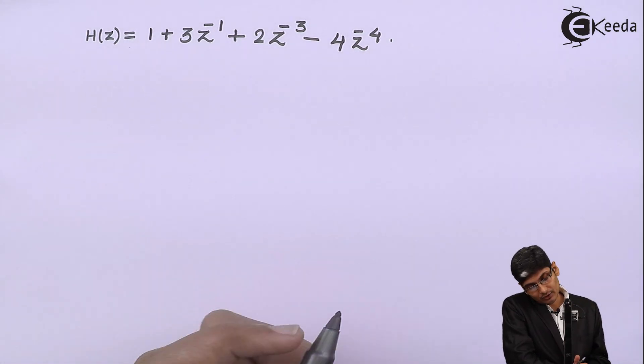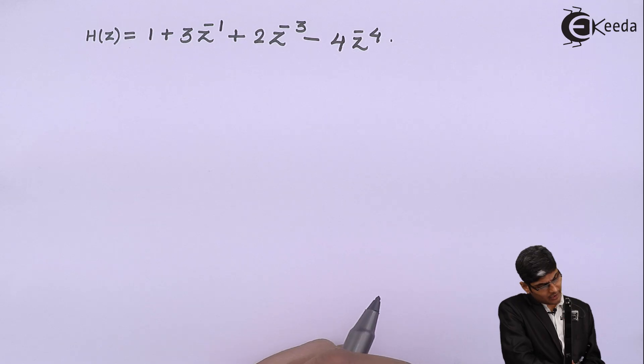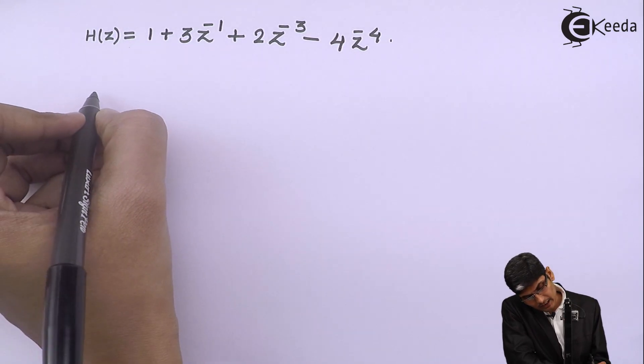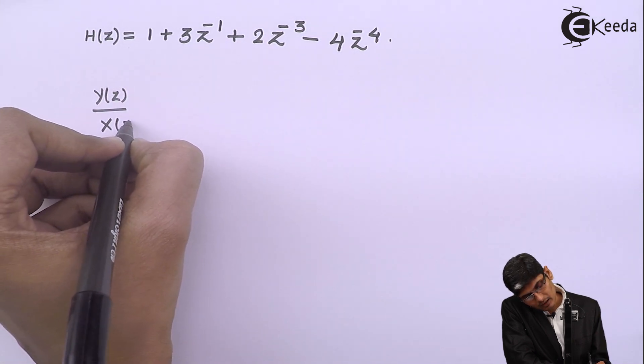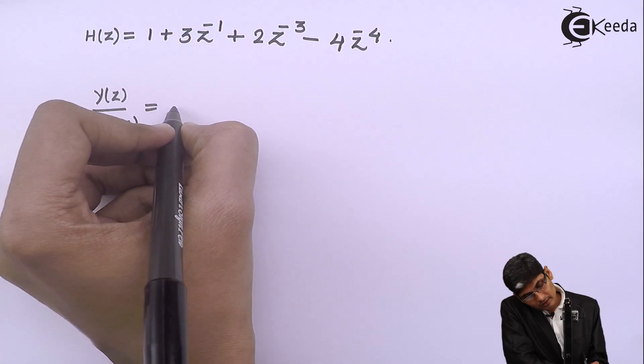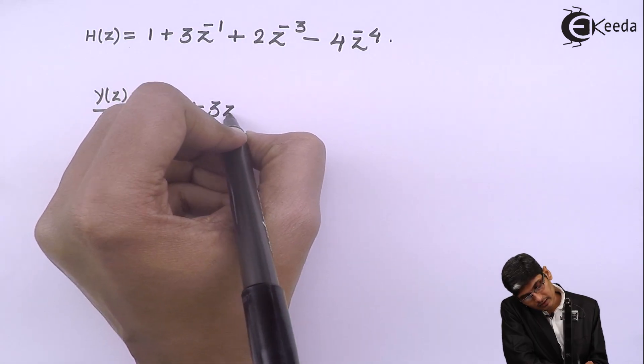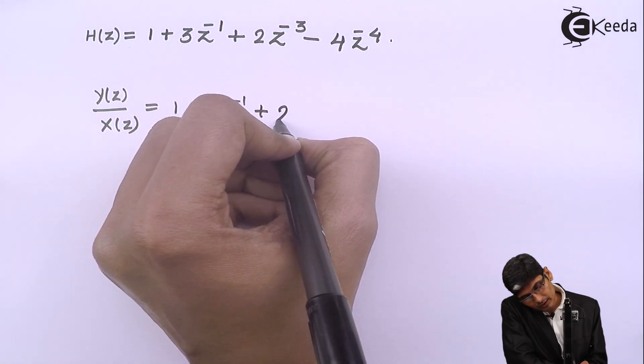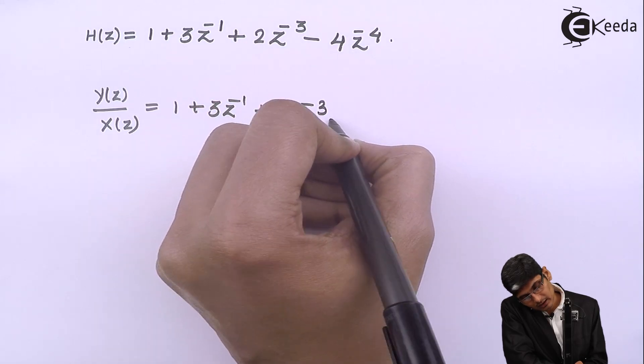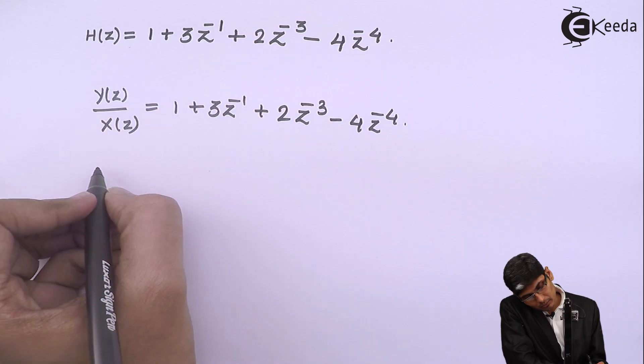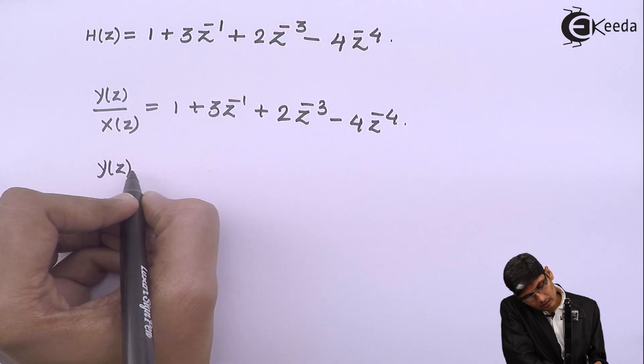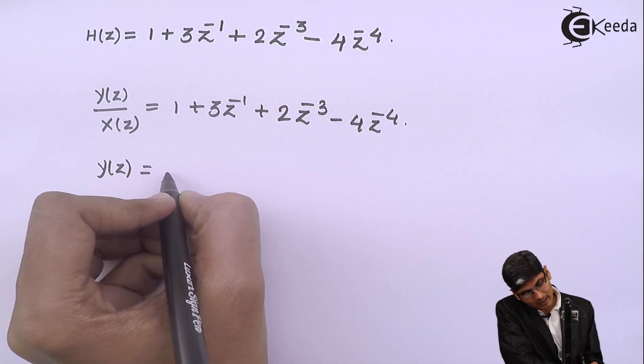Now to solve this further, we need to actually apply... H of Z can be written as Y of Z by X of Z which is equal to 1 plus 3Z inverse plus 2Z raised to minus 3 minus 4Z raised to minus 4. Now multiply both sides by XZ, you will get YZ over here, then you will get XZ over here plus 3 times Z inverse XZ plus 2 times Z raised to minus 3XZ minus 4 times Z raised to minus 4XZ.